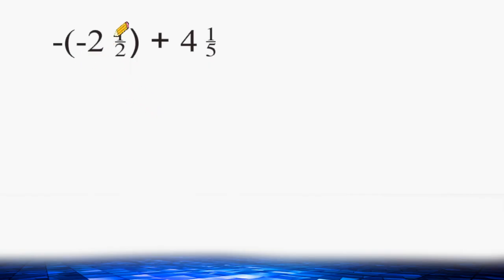In this problem, we have negative 2 and 1 half inside parentheses, and on the outside of the parentheses we have a negative sign, and we are adding that to 4 and 1 fifth.